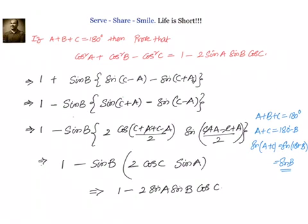So these are the two ways to solve the problem. In the first method, we converted cos square A into multiple angle form, writing it as 1 plus cos 2A by 2. In the second approach, we leveraged the formula that sin A plus B into sin A minus B equals sin square A minus sin square B, which is also equal to cos square B minus cos square A. These are the two ways to solve this particular problem. Please do let me know your feedback. Thanks for your time and support. Bye for now.